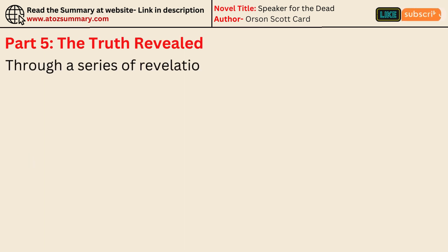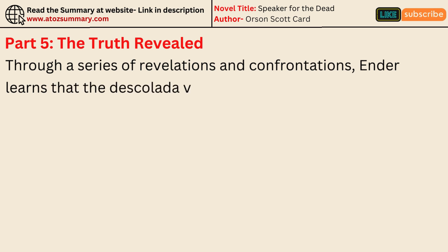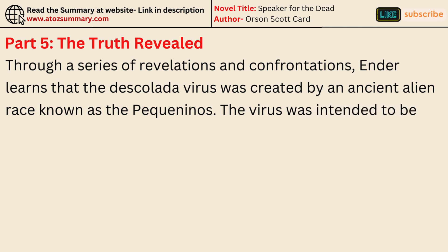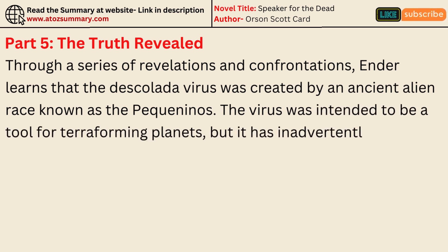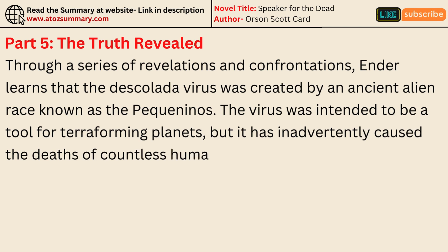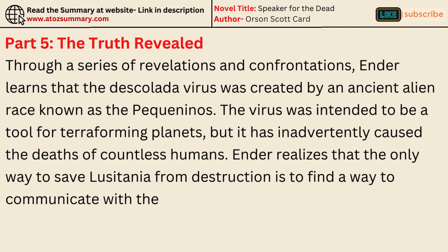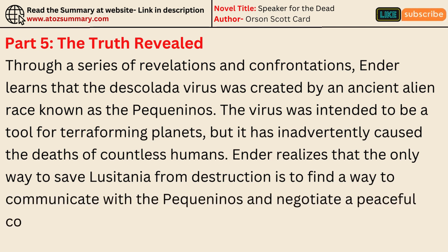Through a series of revelations and confrontations, Ender learns that the Descolada virus was created by an ancient alien race known as the Pequeninos. The virus was intended to be a tool for terraforming planets, but it has inadvertently caused the deaths of countless humans. Ender realizes that the only way to save Lusitania from destruction is to find a way to communicate with the Pequeninos and negotiate a peaceful coexistence.